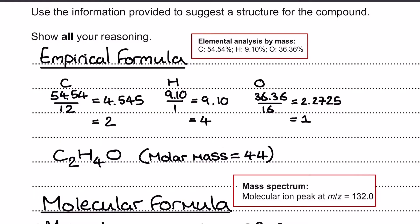This time the empirical formula is C2H4O, and I'm going to present it alongside a quick calculation of its molar mass, because that's usually quite useful straight after. Sometimes empirical formula and molecular formula for a compound can be the same, but that's definitely not true here for various reasons — mainly because of the next piece of data.